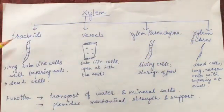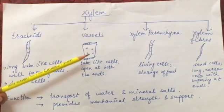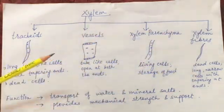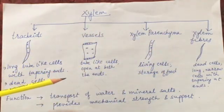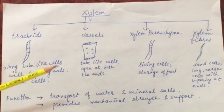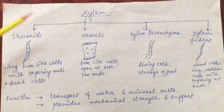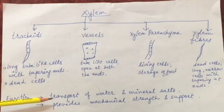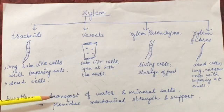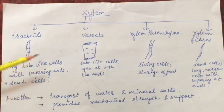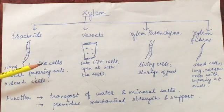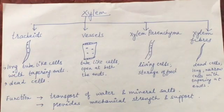To summarize, tracheids, vessels, and xylem fibers are dead cells, and they help in providing mechanical strength and support to the plant. The basic function of xylem is to transport water and mineral salts from the roots to the various parts of the plant. Thank you children. Stay safe, stay at home, and use your time wisely.